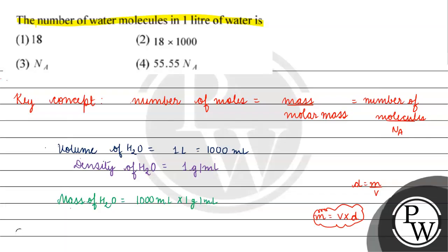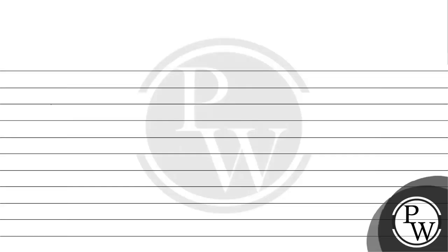Mass of water is equal to 1000 gram. Now let's find moles of water. Moles of water is basically equal to mass of water which is 1000 gram by molar mass of water or molecular mass of water which is 18 gram per mole. 18 gram per mole is equal to 2 into 1 gram per mole because there are 2 hydrogen atoms.